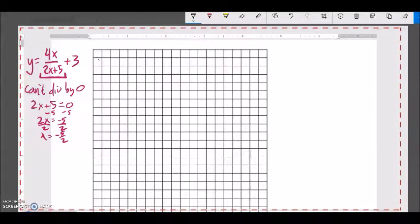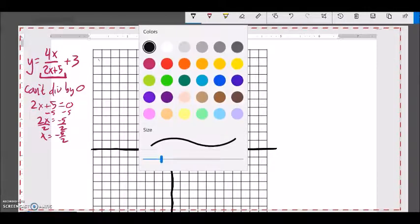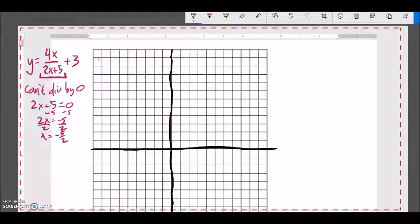So I know where one of my asymptotes is then. Let me get an x and y axis on here. Good. Good. So, x is negative 5 halves, negative 5 halves, that's 2 and a half, so 1, 2 and a half, so right about here.